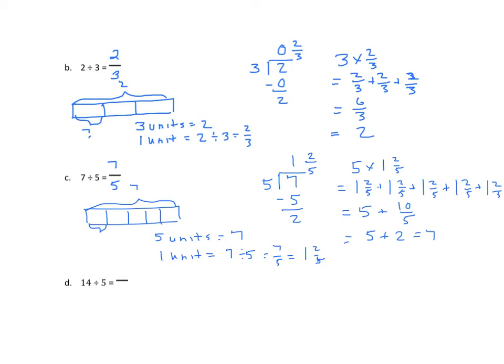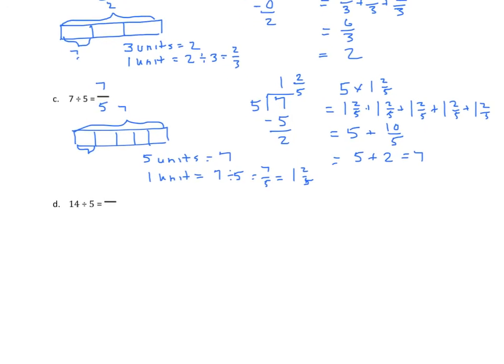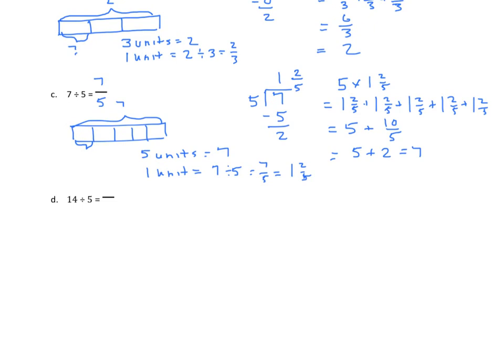Let's do one last example. Now we have 14 divided by 5 is fourteen-fifths. And we could also, at this point, change that to our mixed number as well. So that would be 2 and four-fifths.